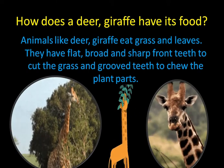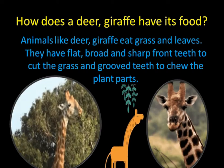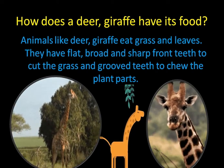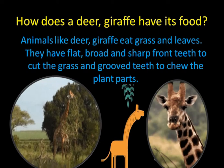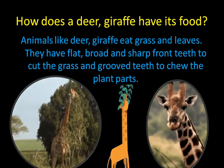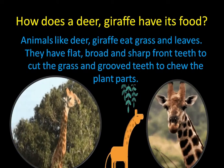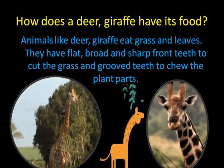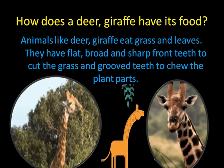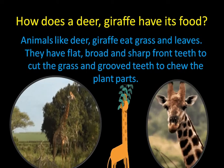How does a deer or a giraffe have its food? Animals like deer and giraffe eat grass and leaves. They have flat, broad and sharp front teeth to cut the grass, and grooved teeth at the back — just like the teeth you have at your back — to chew the plant parts.